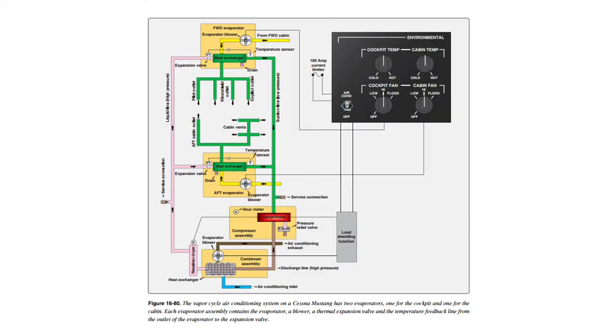There's a figure of a vapor cycle system from a Cessna Mustang in your textbook. I encourage you to see if you can follow that cycle through and find the evaporator and the condenser and puzzle through how the different air flows work and how the coolant flows through this system.